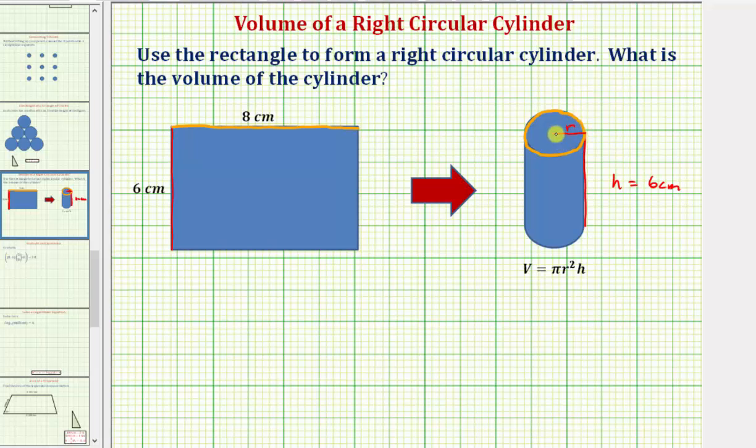To do this, we'll be using the circumference formula for a circle, where the circumference of a circle C is equal to 2πr, or π times d, where r is the radius and d is the diameter. But because the volume formula involves r, not d, we'll just use the formula C equals 2πr.